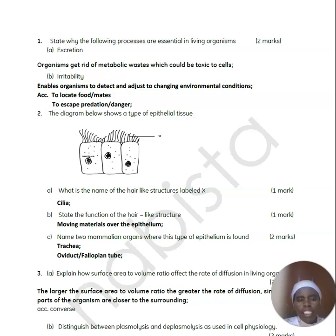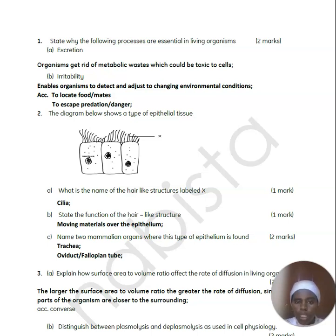It's a KNAB stage paper. The first question asks you to state why the following processes are essential in living organisms. The first one is excretion. Excretion is the removal of metabolic waste products and substances in excess of requirement. Excretion enables organisms to get rid of metabolic waste products that could be toxic to the cells — for example, urea, excess salts, excess water. If those substances are left to accumulate in the body, they are going to be toxic to the cells.